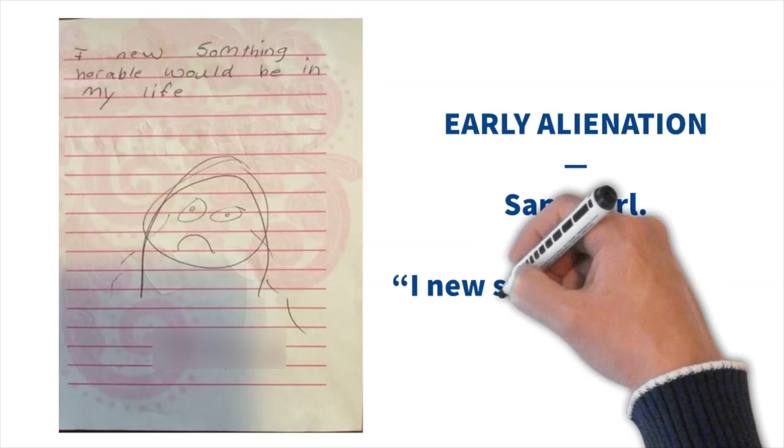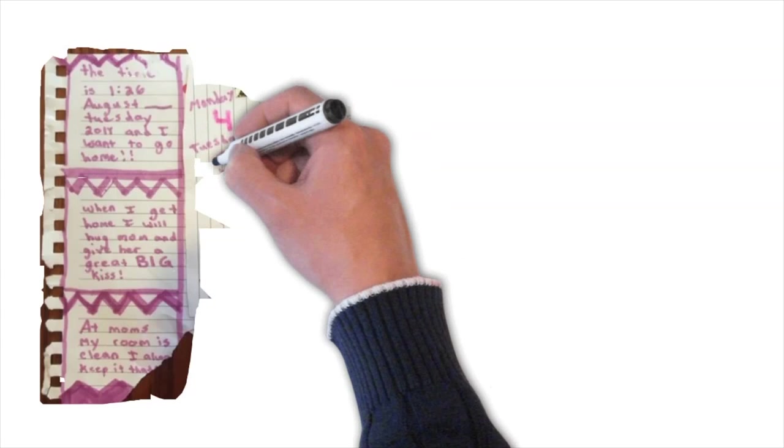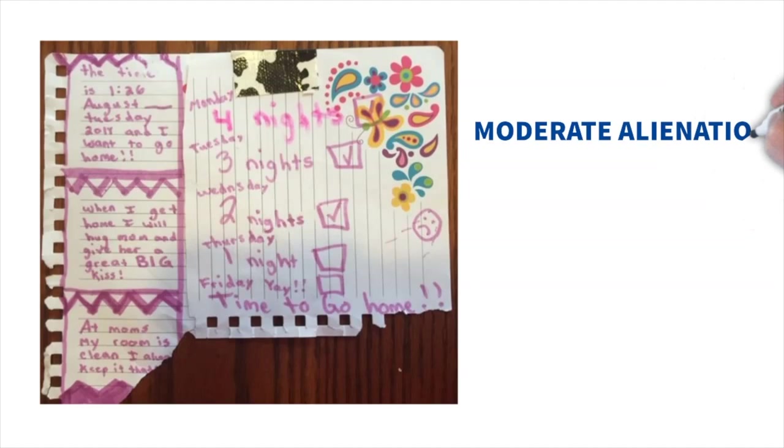Same girl. Still facing that early alienation. I knew something horrible would be in my life. For the same girl, the alienation progresses into the moderate stage where she draws pictures counting the days to go home to mom's house and celebrate.